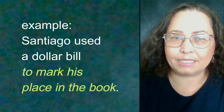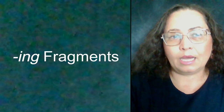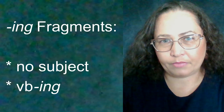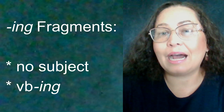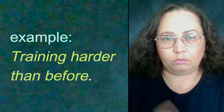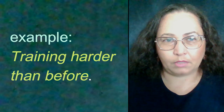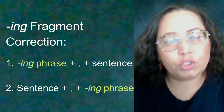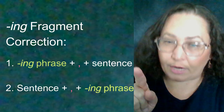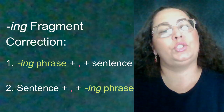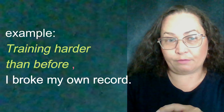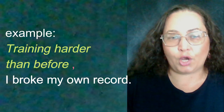For example: 'Santiago used a dollar bill to mark his place in the book.' Now, ing fragments. An ing fragment has no subject and starts with a verb in -ing. For example: 'Training harder than before.' Obviously, that doesn't make sense on its own. To correct an ing phrase fragment, add a comma to the ing phrase and connect it to the sentence, then the idea is complete. For example: 'Training harder than before, I broke my own record.'